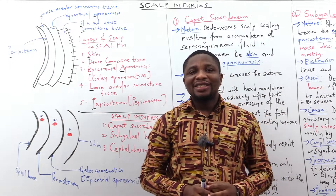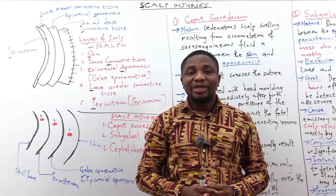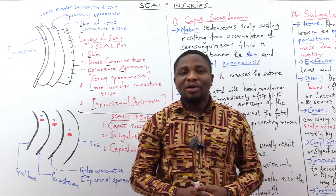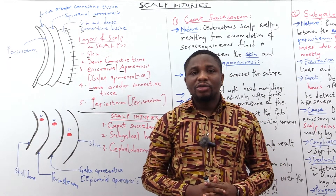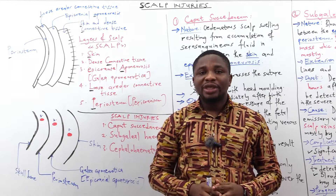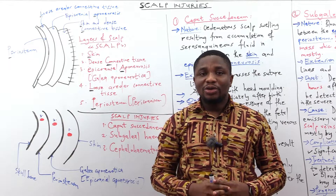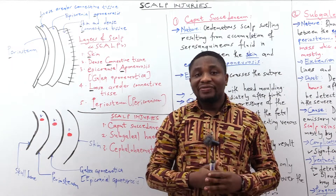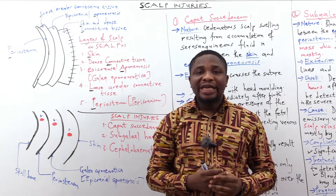The question is: why is it advisable to suction the mouth before the nose during the resuscitation of a newborn? The answer is that newborns are nasal breathers. Suctioning the nose first will stimulate respiration, causing the baby to aspirate anything in the oropharynx, which could cause aspiration pneumonia. Suctioning the mouth first will remove all impurities and foreign bodies in the oropharynx.